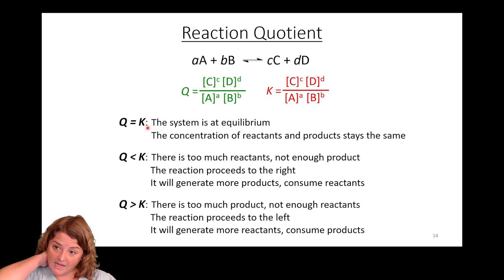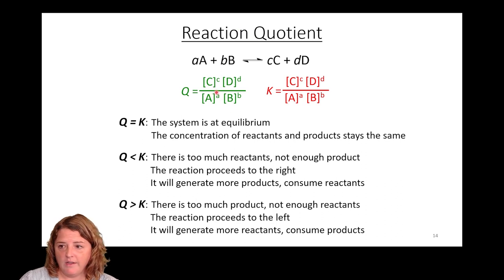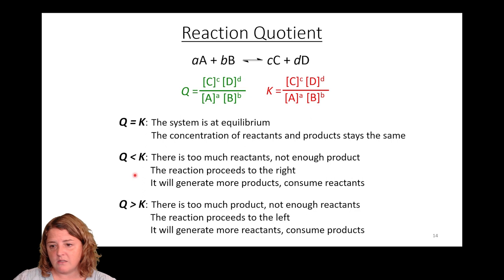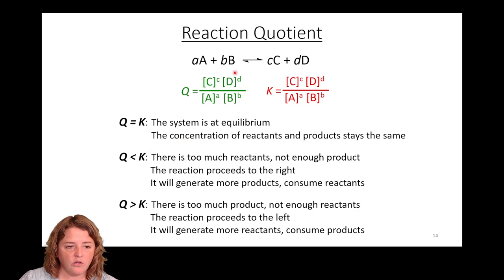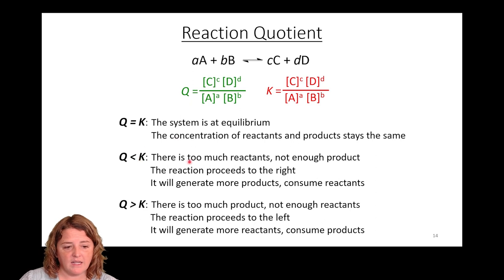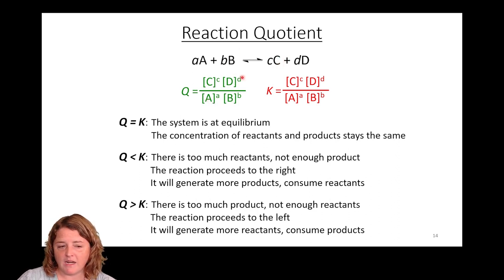If Q equals K, your ratio of products over reactants right now matches the equilibrium ratio — you're at equilibrium. If Q is less than K, you don't have enough product, or you have too many reactants. Your reaction is going to proceed to the right: it'll make more products, increase the numerator, and deplete reactants, decreasing the denominator, until it reaches the equilibrium constant.